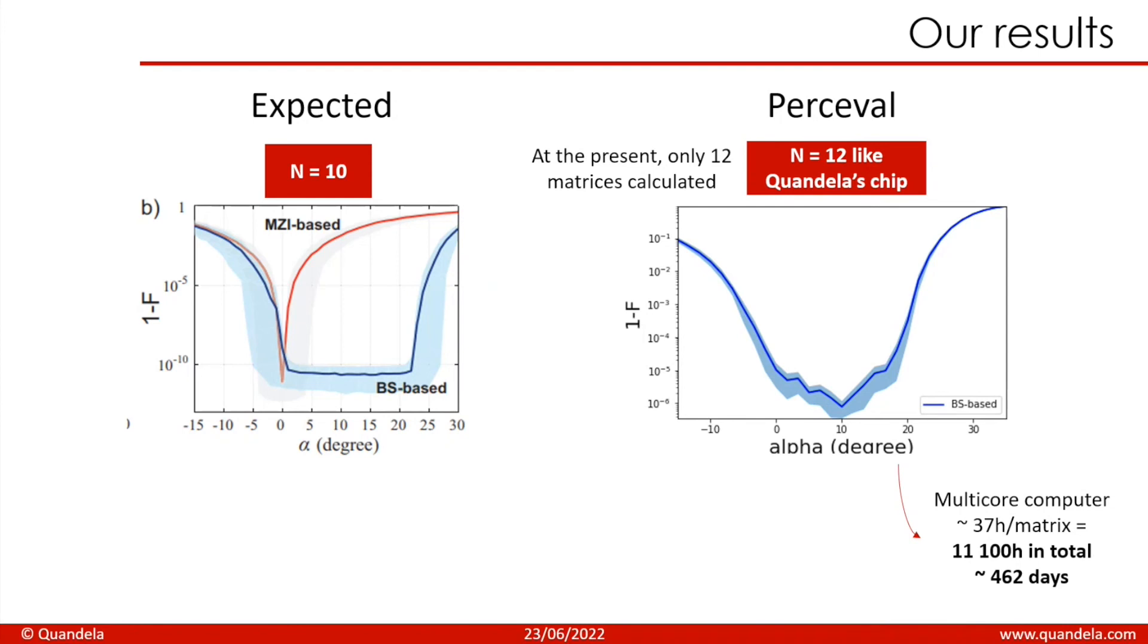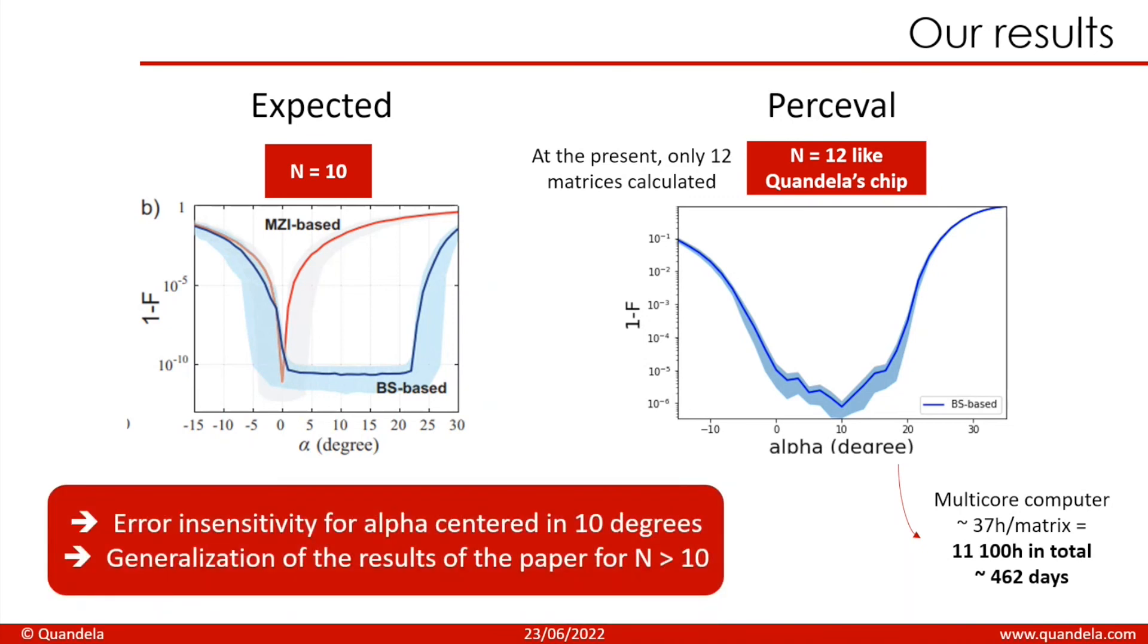Like for the matrices of size 5, the BS based circuit has a plateau of almost 20 degrees. And we can see an error insensitivity for alpha centered in 10 degrees. Alpha centered at 10 degrees would be great for experiments, because there is an insensitivity to errors.